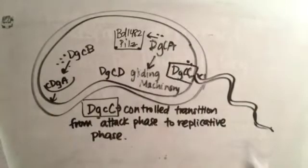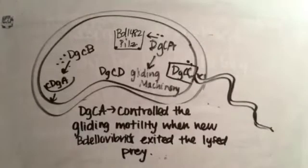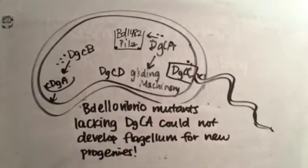Gene DgcC controlled the transition from attack phase to replication phase. Gene DgcC controlled the gliding motility when new Bdellovibrios exited the lysed prey. Bdellovibrio mutants lacking gene DgcC could not develop flagellum for new progeny.